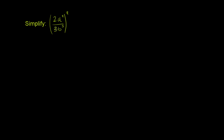Simplify 2a squared over 3b to the fifth, all of that to the fourth power. We can use the property that if I have x over y raised to the nth power, this is the same thing as x to the nth power over y to the nth power.